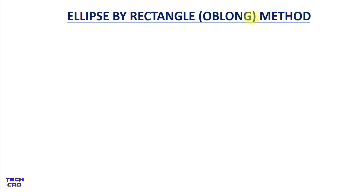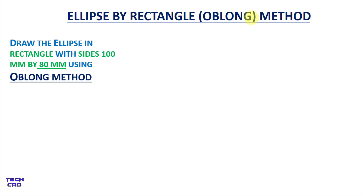Hello everyone, in this tutorial we are going to understand how to make an ellipse with the help of the oblong method. This is the question: to draw the ellipse in a rectangle with sides given as 100 mm by 80 mm.